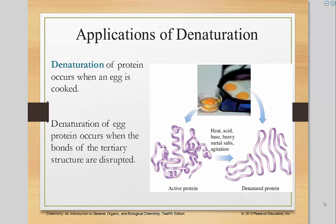Here's one example: the proteins found in egg whites. When we cook the egg, notice it goes from that yellowish, milky color to white. That's because the heat breaks apart those bonds. The denaturation of egg protein occurs when the bonds of the tertiary structures — secondary, tertiary, and quaternary — are disrupted.